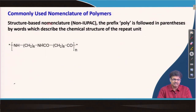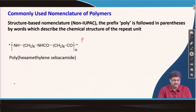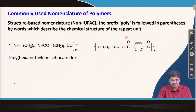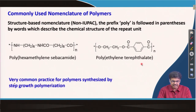Structure-based nomenclature is also commonly used. For example, the repeat unit of the nylon polymer is hexamethylene sebacamide, synthesized from hexamethylene diamine and sebacic acid — it is an amide, so we put the name of this repeat unit in brackets with 'poly' before it. For PET, synthesized from ethylene glycol and terephthalic acid, it is an ester, so the repeat unit is ethylene terephthalate, giving poly(ethylene terephthalate). This practice is common for polymers synthesized by step growth polymerization.